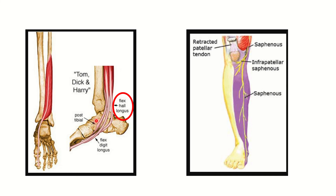The blood vessels and nerve lie just behind the two tendons — the tibialis posterior and the flexor digitorum longus. So just behind the flexor digitorum longus are the blood vessels and nerve, and then the flexor hallucis longus. So the flexor hallucis longus lies most posterior among the structures passing behind the medial malleolus. Here we can see the flexor hallucis longus arising from the fibula and finally inserted into the big toe.